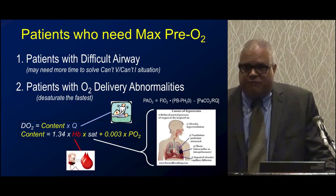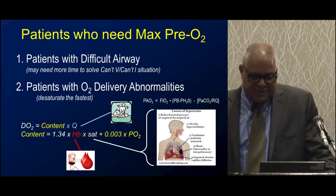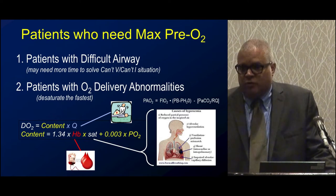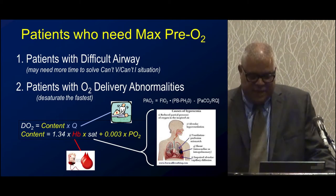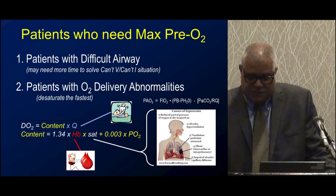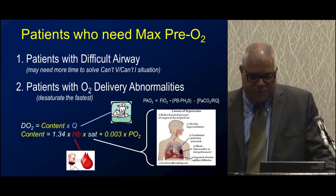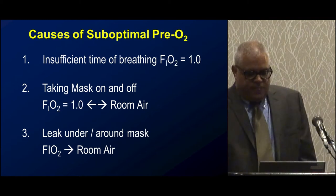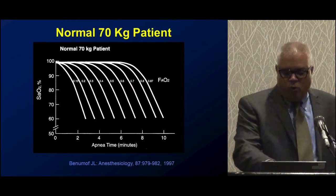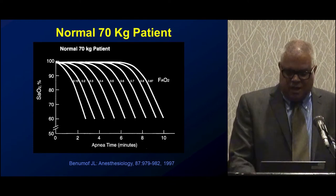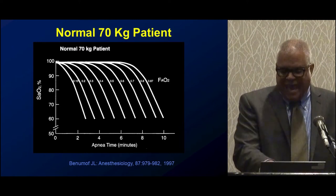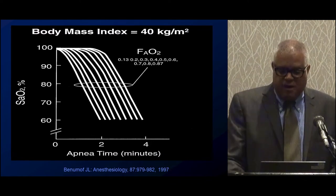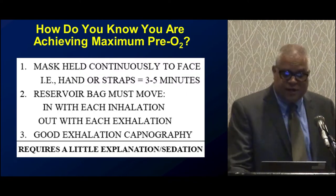Causes of hypoxemia include reduced partial pressure of inspired oxygen (increase FiO2 to help), alveolar hypoventilation, ventilation-perfusion mismatch (sometimes correctable with higher FiO2 or PEEP), shunt (little you can do), and impaired alveolar-capillary diffusion (not acutely fixable). In a normal 70-kilogram person, acute desaturation approaches 10 minutes; in patients with much higher BMI, it is much shorter. Think about these factors when deciding what strategies to use to establish an airway.